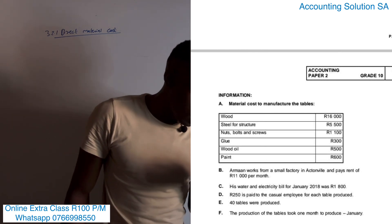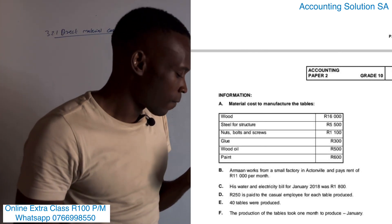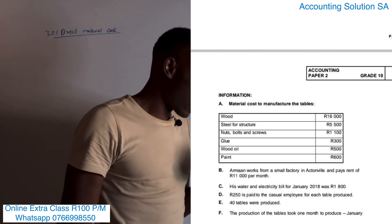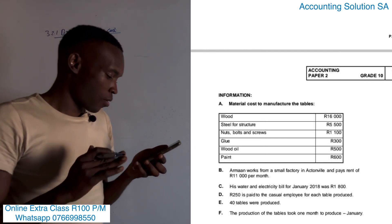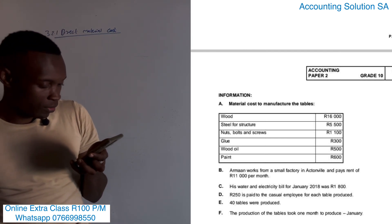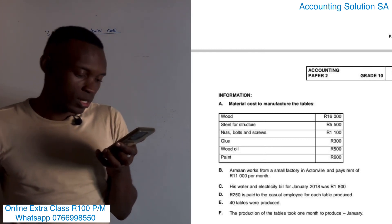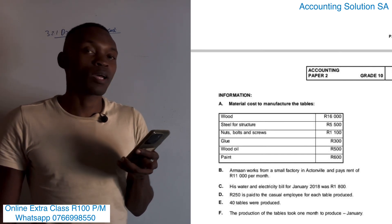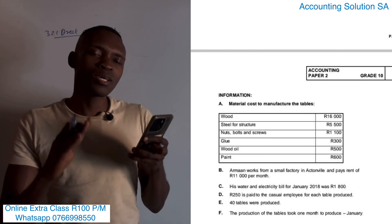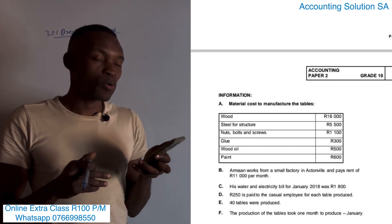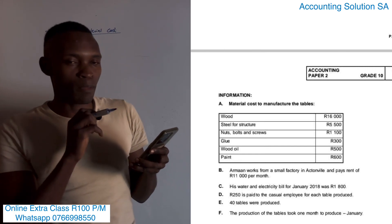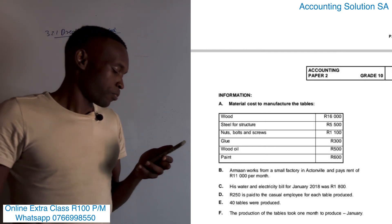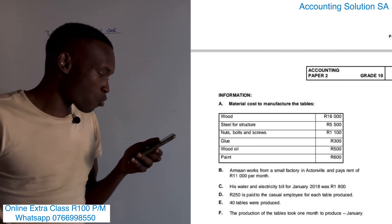It's three marks. Information A gives us the material cost to manufacture a table: wood, steel structure, bolts and screws, glue, wood oil, and paint. Information B tells us that the worker works from a small factory in Actonville and pays a rent of R11,000 per month. Information A is the one that helps us calculate the direct material cost. They already give us the total cost of the materials — for example, wood is R16,000.